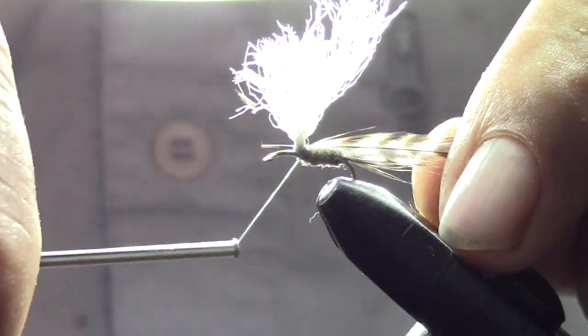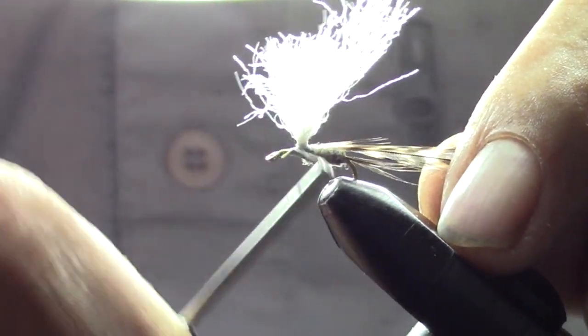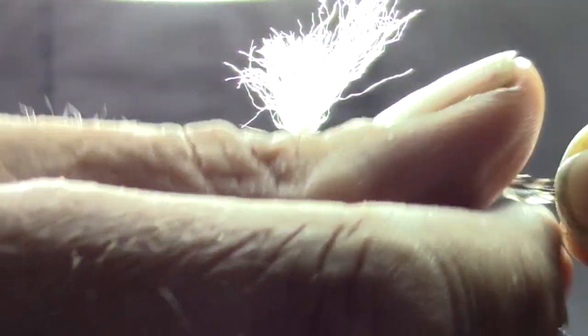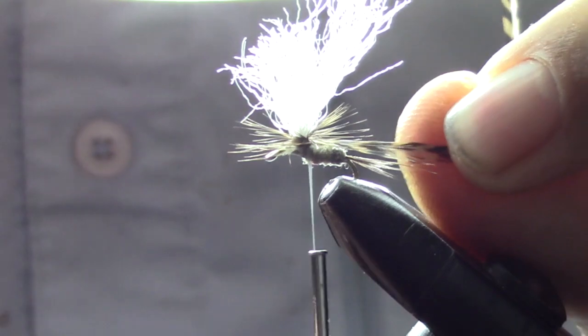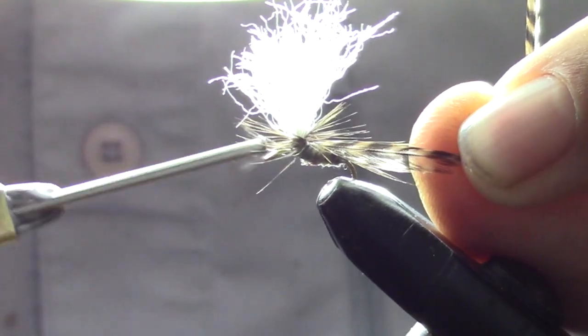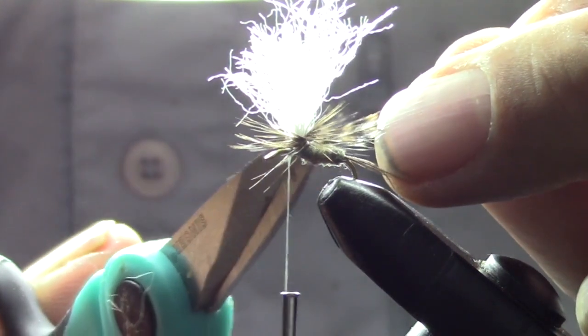We're just going to wrap it right up next to the parachute post. Trim off the little stem and wrap it horizontally around the parachute post. Just a couple wraps—we don't want it too heavy, but we want it to be visible.